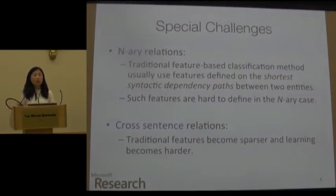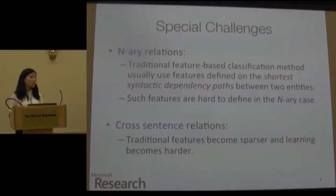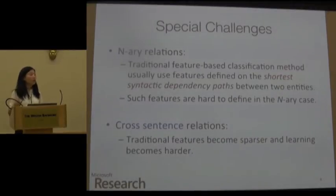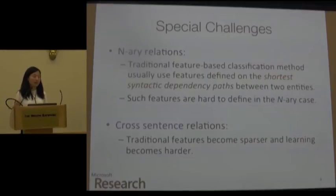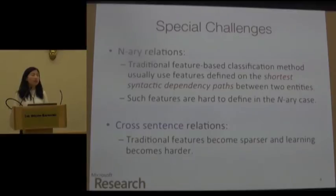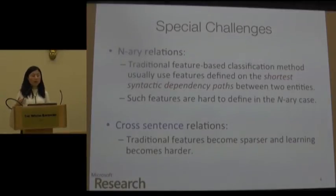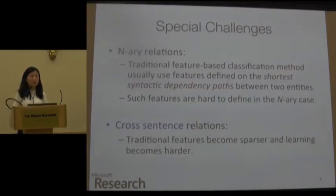We face some special challenges because we are now dealing with n-ary relations. In the tradition of binary relations, people usually design features or neural architectures along the shortest syntactic dependency path between the two entities. However, in the n-ary case, it's unclear how to define the shortest path. Moreover, with our cross-sentence goal, this will make feature-based methods suffer from sparsity and pose challenges in learning.